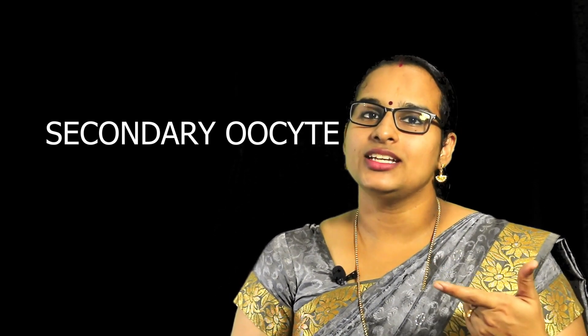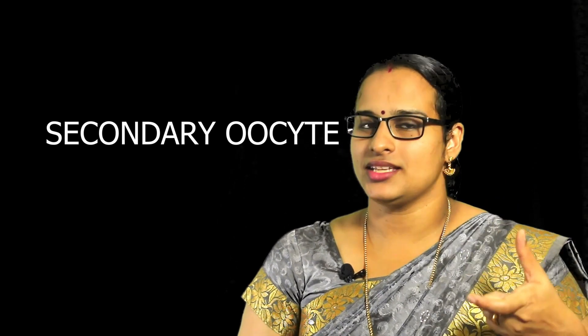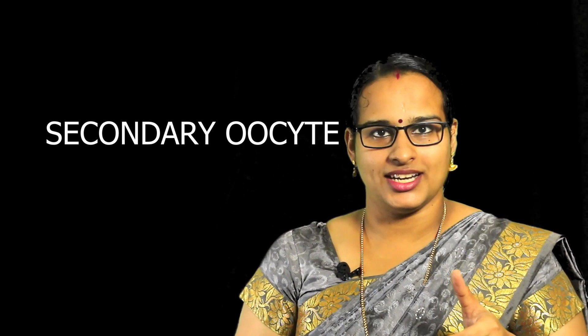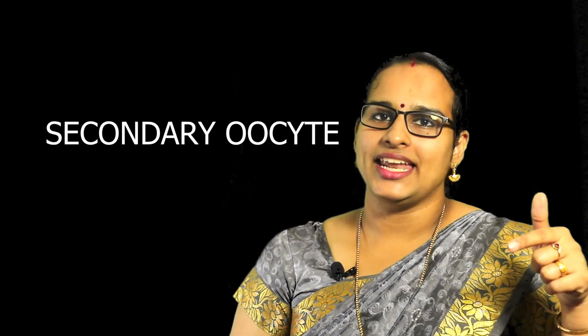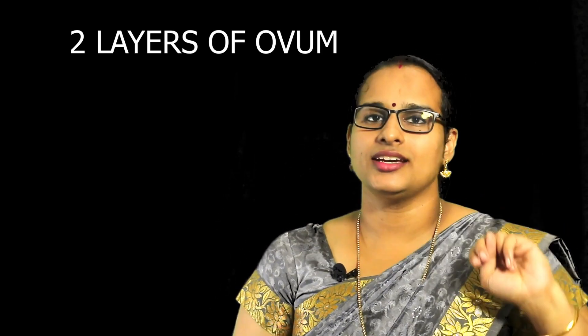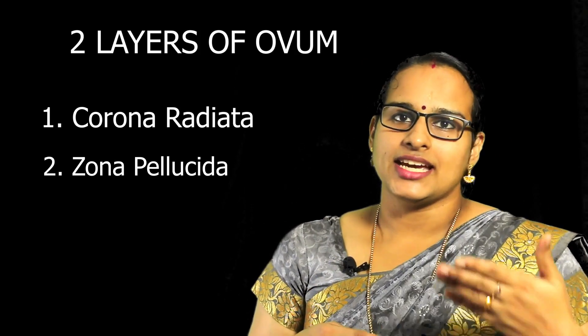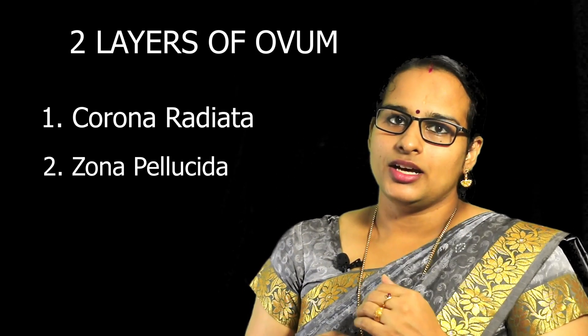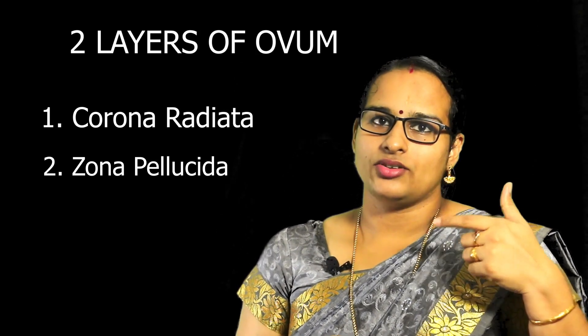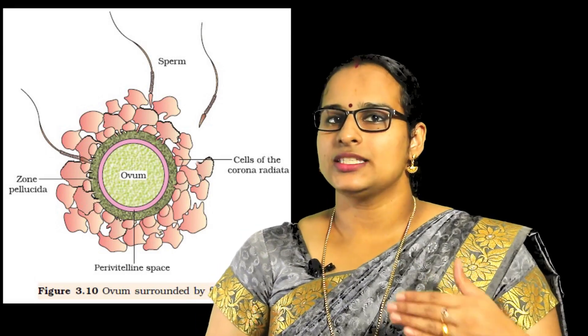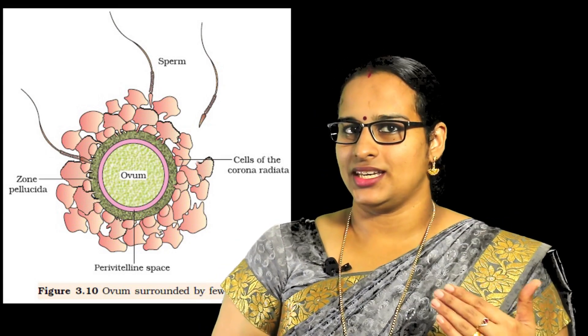The ovum released during ovulation is a secondary oocyte. During fertilization, the sperm enters into the secondary oocyte. The secondary oocyte has two layers — Corona Radiata and Zona Pellucida — which are pierced. With the help of enzymes secreted by the acrosome, the sperm enters into the cytoplasm of the secondary oocyte.